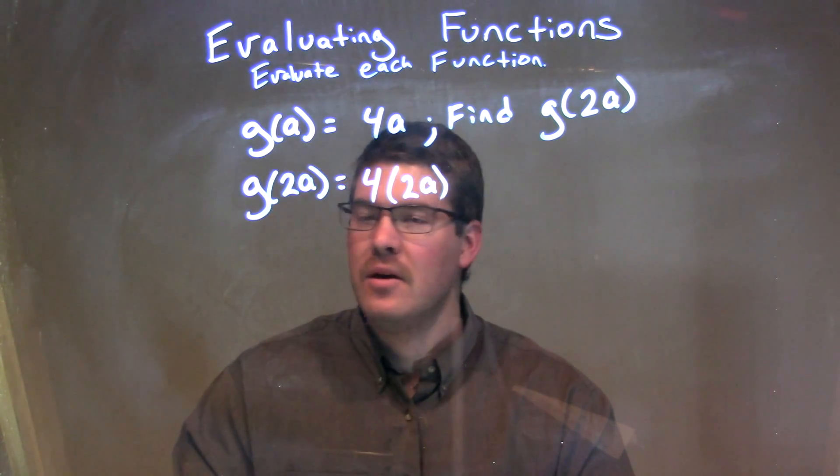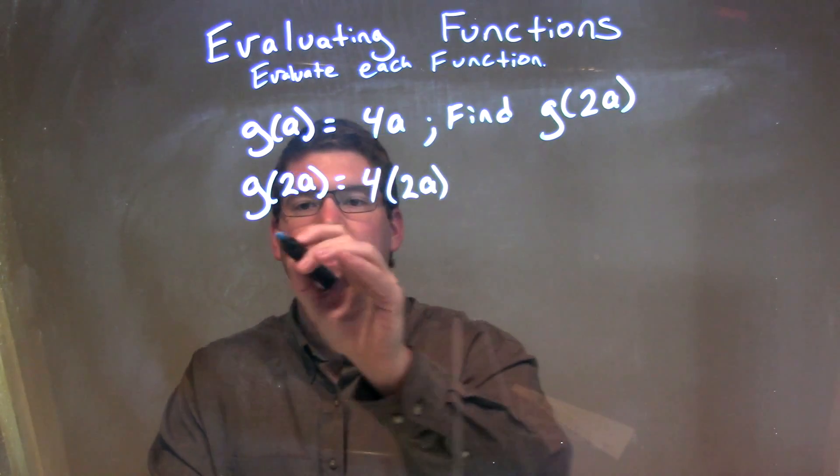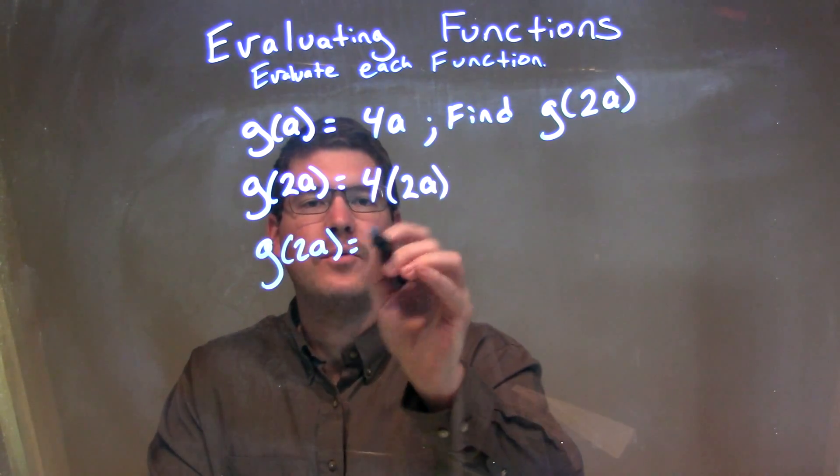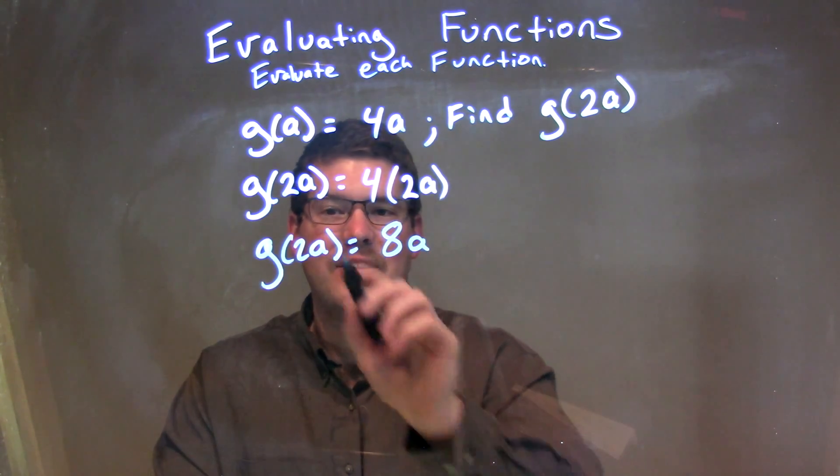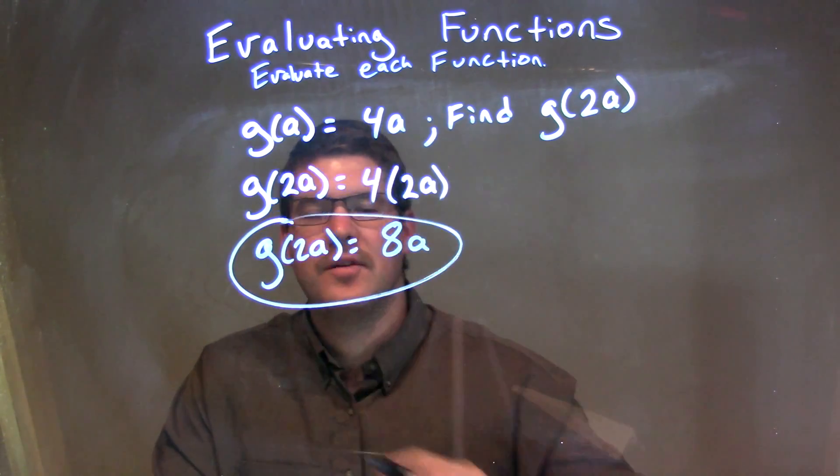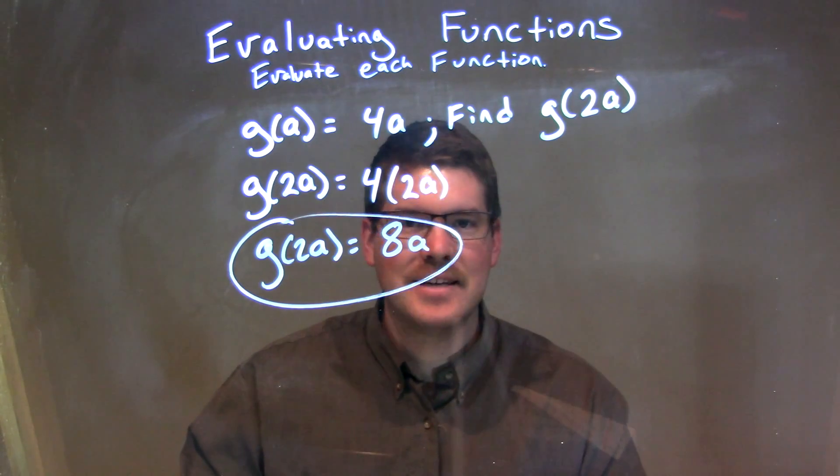Okay, so now we just need to simplify. So, g of 2a is equal to 4 times 2a is just 8a. That's it. Our final answer is g of 2a is equal to 8a.